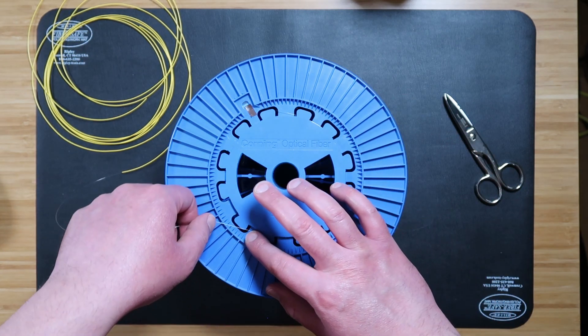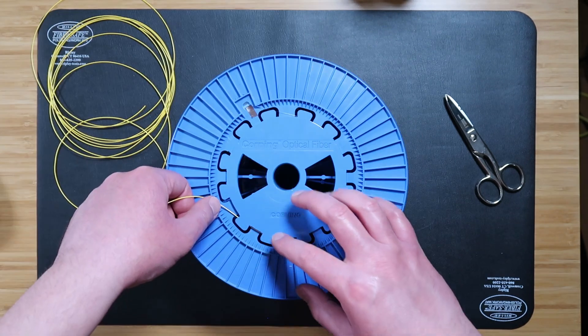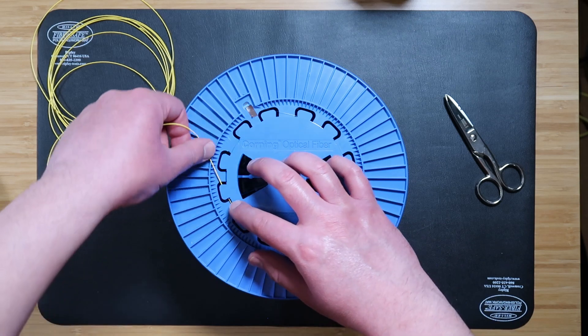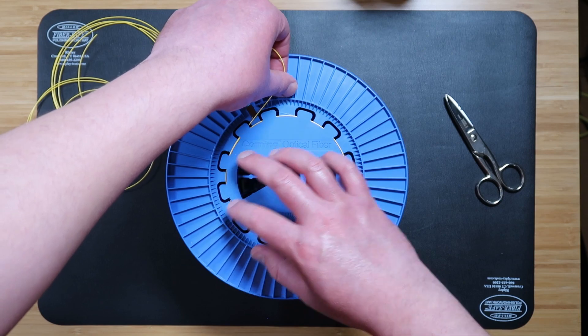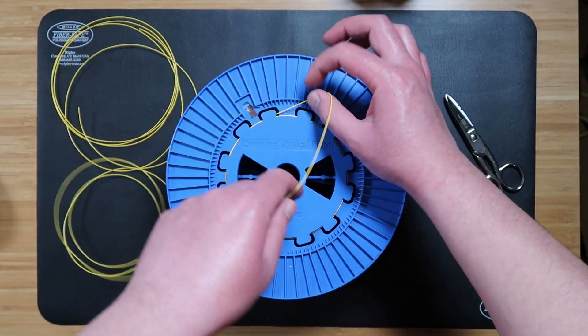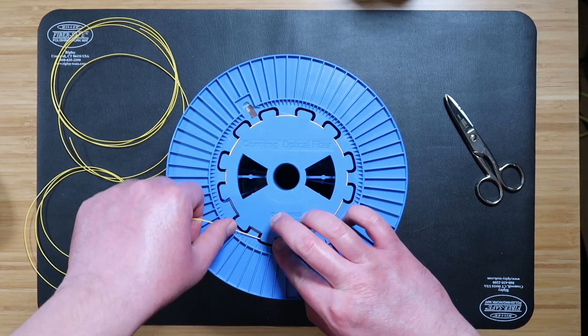Wind the remaining bare fiber back within the slack channel provided in the spool. Make sure the fiber is completely set within the slack coil channel. And then as you start to see the furcation tube wrapping, continue. As you see, the tube simply provides additional protection to the bare fiber and makes it a little easier to work with for termination.